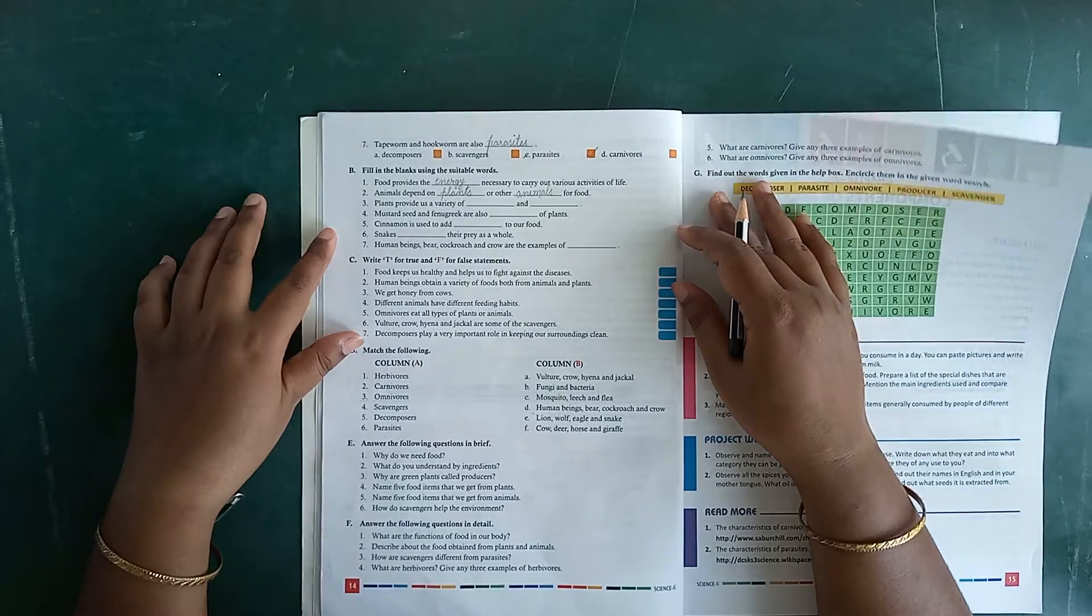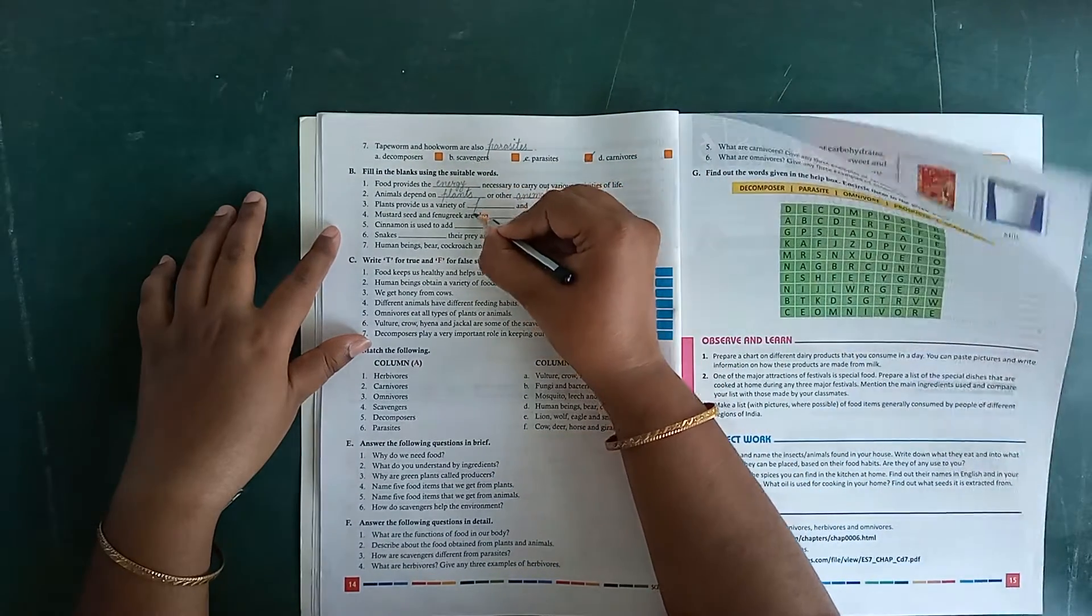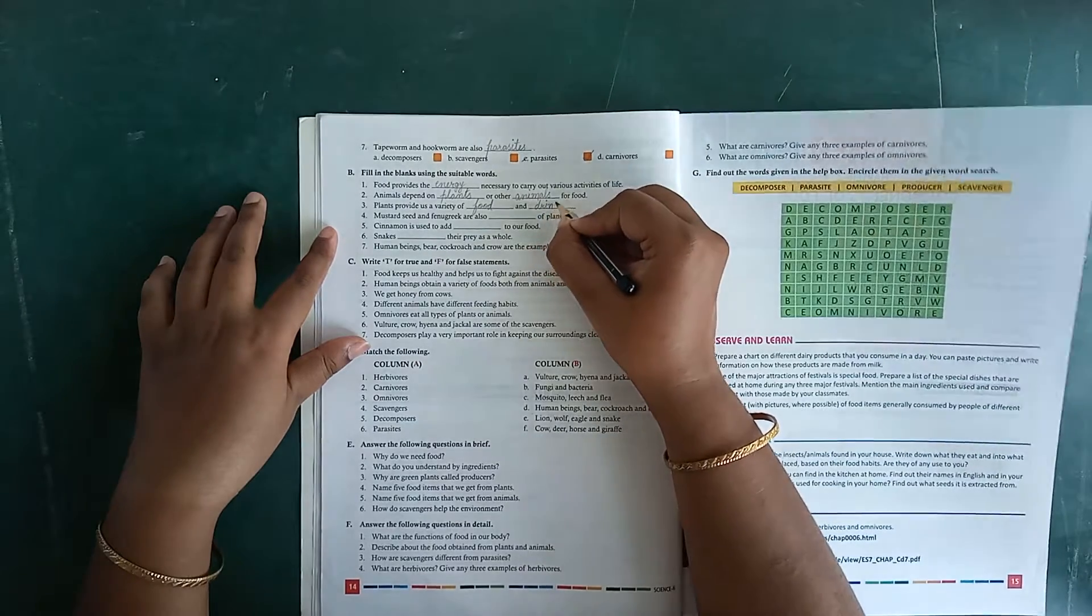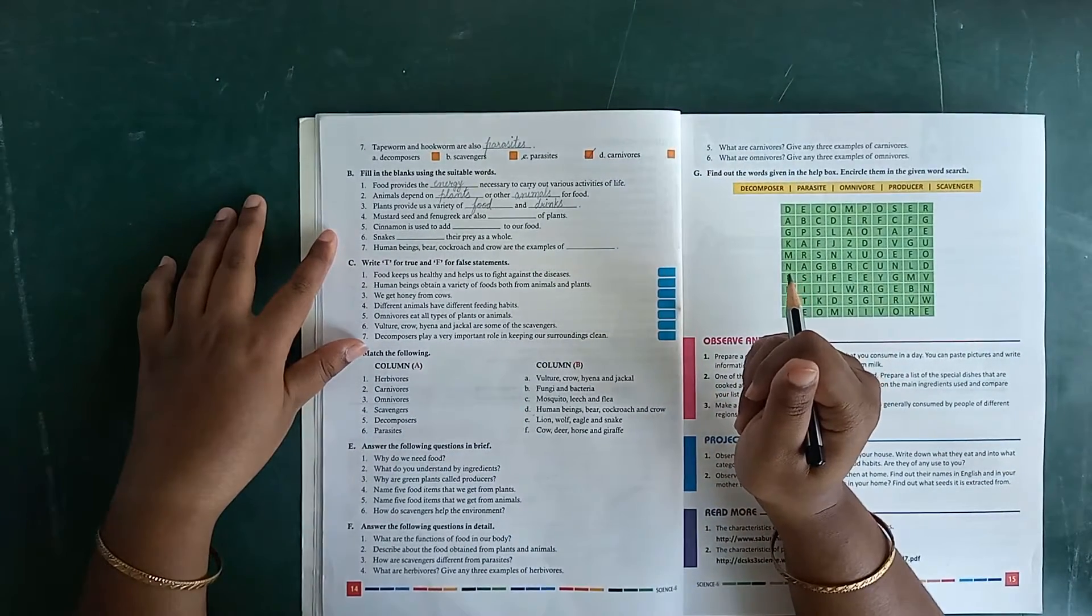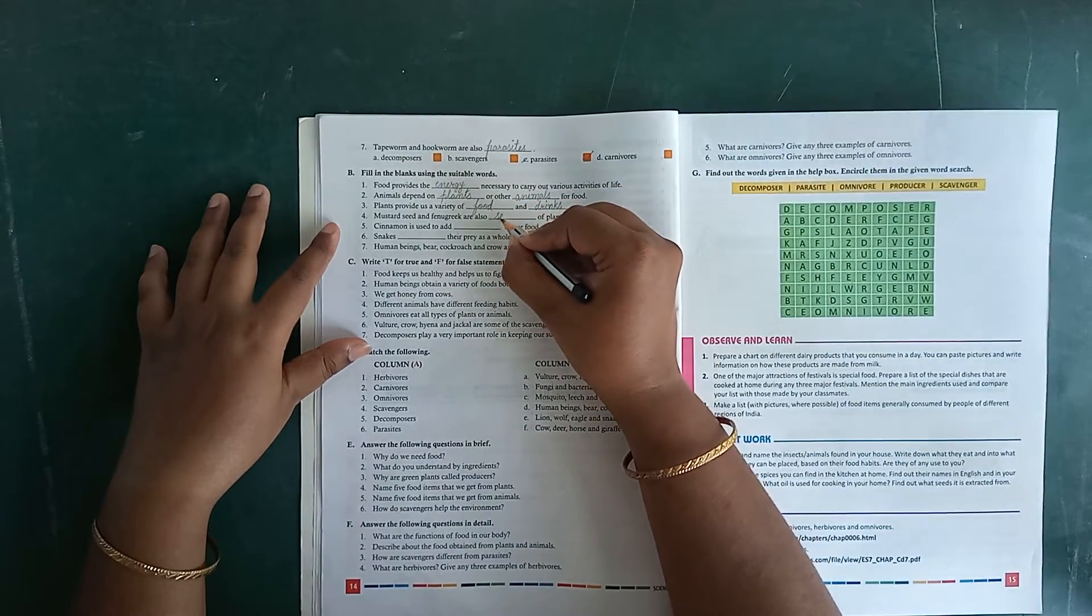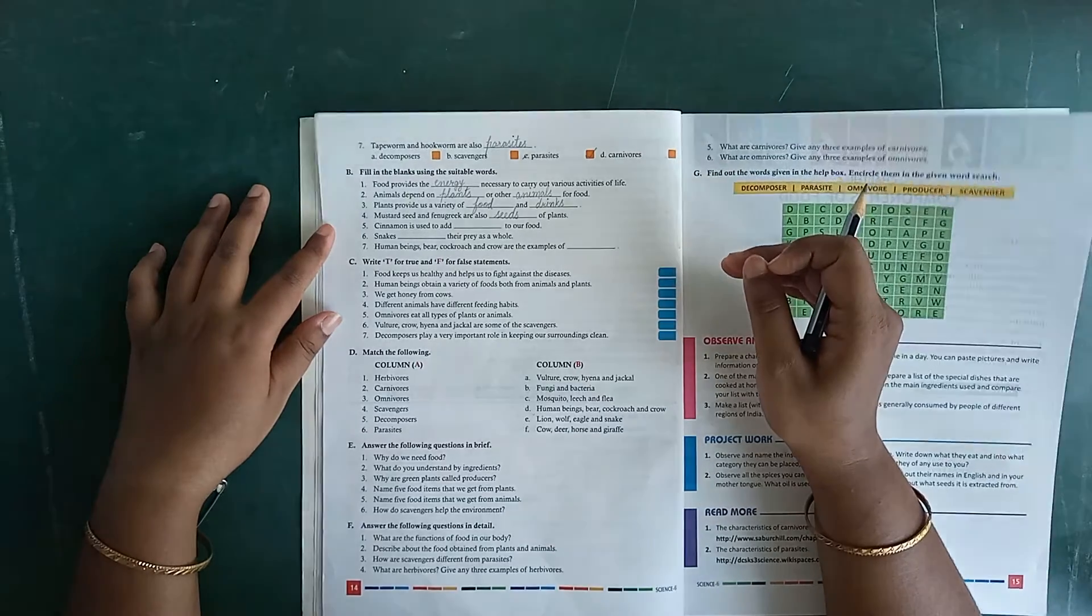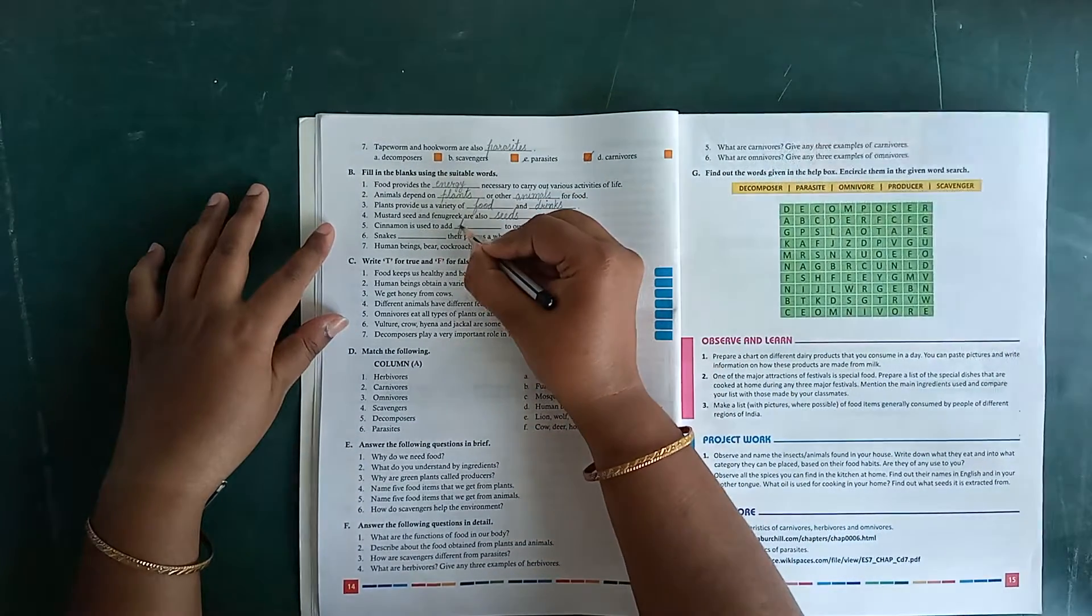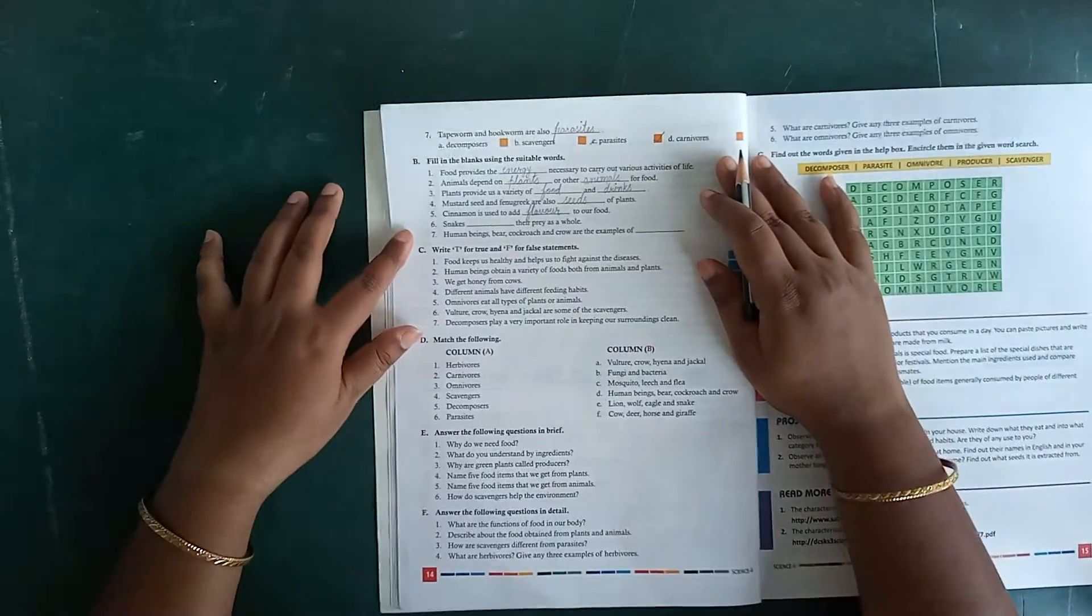Number three, plants provide us a variety of dash and dash. Variety of food and drinks. Then number four, mustard seed and phantom green are also called dash of plants. Seeds of plants, S-double E-D-S. Number five, cinnamon is used to add dash to our food. Cinnamon is used to add flavor, F-L-A-V-O-U-R, flavor.